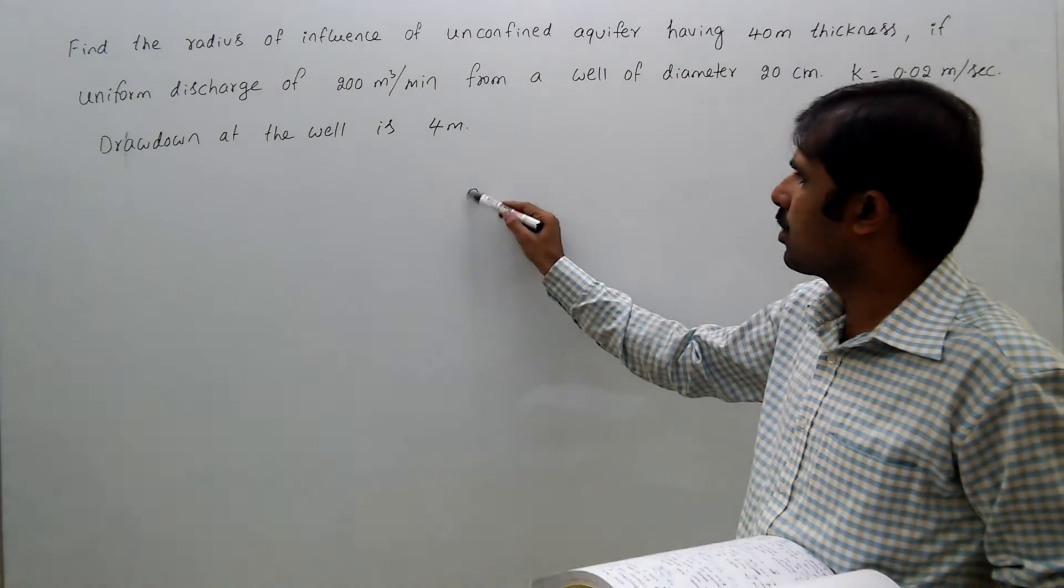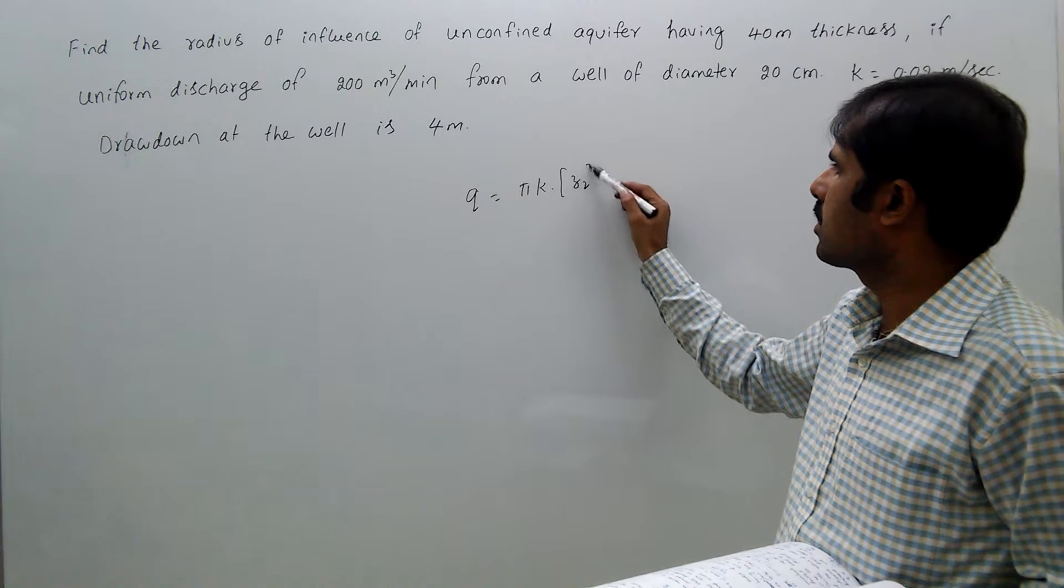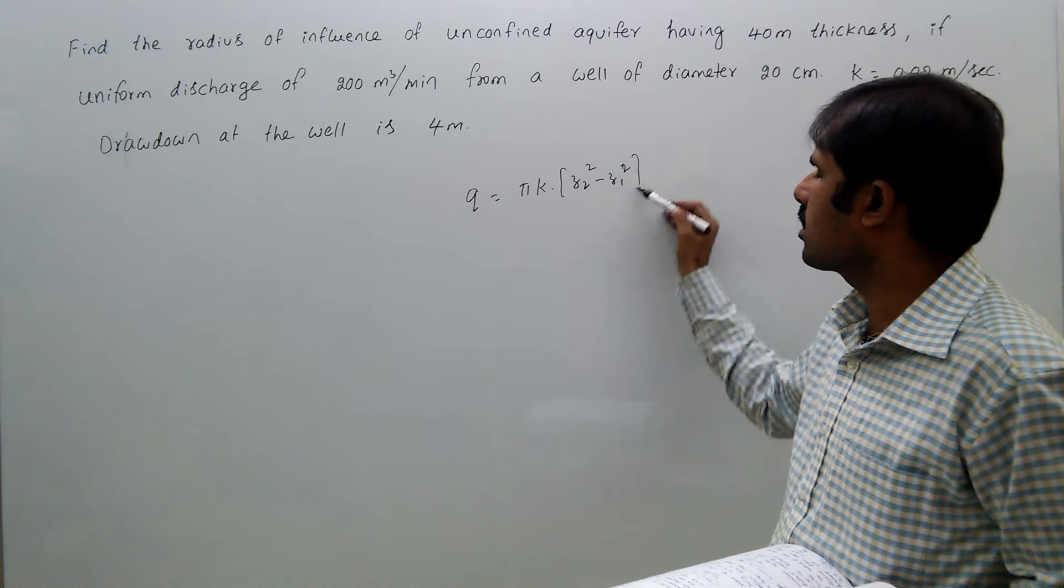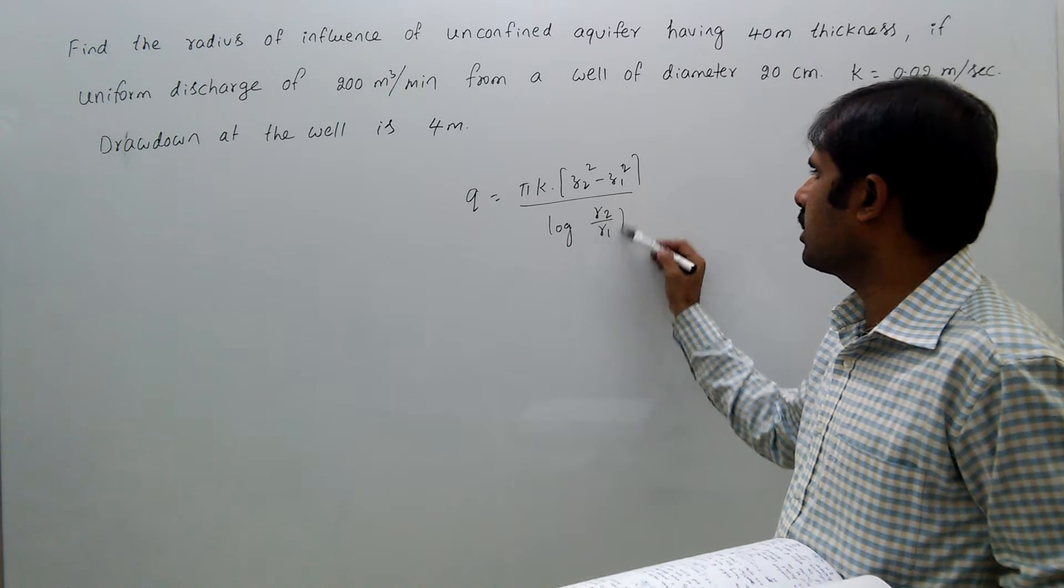Now we know the formula: q equals pi k times z2 square minus z1 square divided by log of r2 by r1.